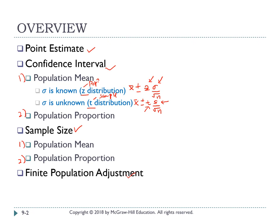The formula for population proportion confidence interval is: p plus or minus z multiplied by the square root of p times (1 minus p) over n. For proportion, you always use z. For sample size of population mean, n equals z multiplied by sigma over error, squared. For sample size of population proportion, n equals pi times (1 minus pi) times (z over error) squared.